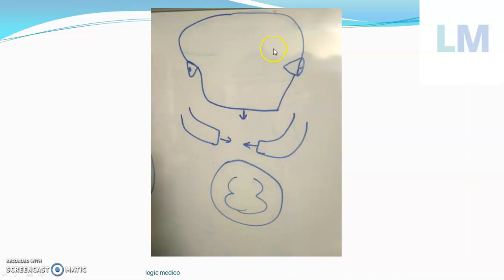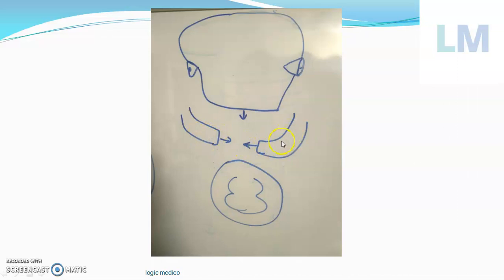If you see the embryo head-on, there is one median process coming from above giving rise to the forehead and the nose — we call it the frontonasal process — whereas two paired processes come below the stomatodium or primitive mouth, called the mandibular processes. The frontonasal process grows downwards and the mandibular processes grow towards one another, separating the stomatodium from the pericardial bulge. Subsequently the mandibular arch and other branchial arches push the heart from the future neck area into the thoracic cavity.